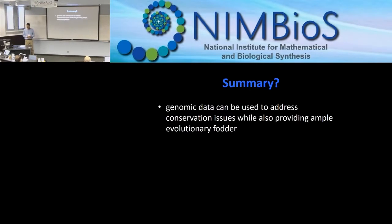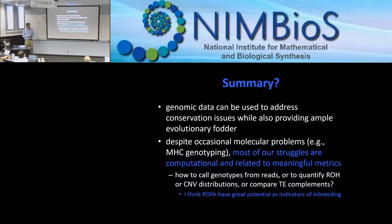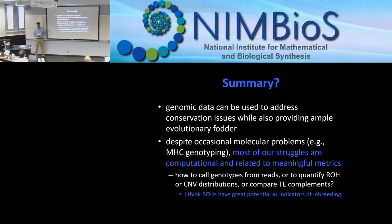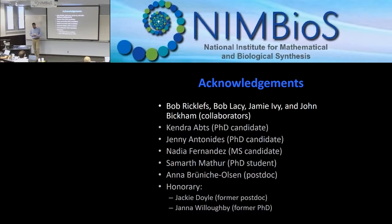In summary: genomic data can be used to address conservation issues while also providing evolutionary insights. Despite occasional molecular problems like MHC genotyping, most of our struggles are computational — related to meaningful metrics. Genome sequencing, assembly, and annotation are fairly straightforward now, but calling genotypes from millions of reads, quantifying runs of homozygosity, characterizing copy number variant distributions, comparing transposable element complements, and comparing distributions across individuals or populations are still things we struggle with and see potential in.